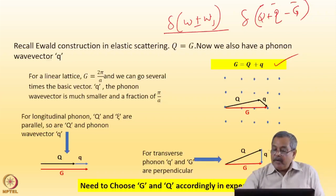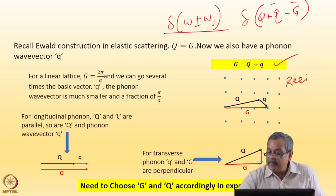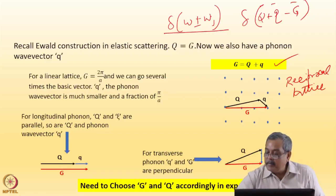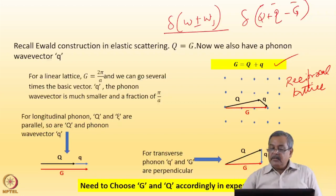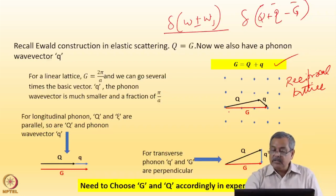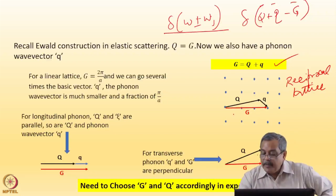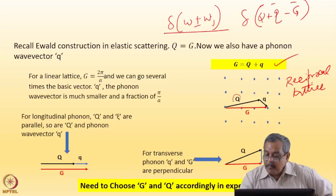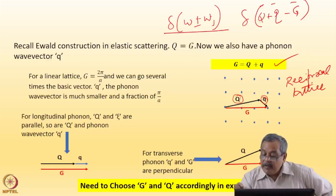Let me look at the reciprocal lattice. Here is the reciprocal lattice — I need not restrict myself to the first Brillouin zone for g; g can go over several Brillouin zones. For longitudinal phonons, g and q are parallel and q is also parallel, so q + q = g in a collinear vector diagram. For a transverse phonon, the phonon wave vector q is perpendicular to g, giving a right-angle vector diagram where Q + q = g but Q and q are perpendicular.